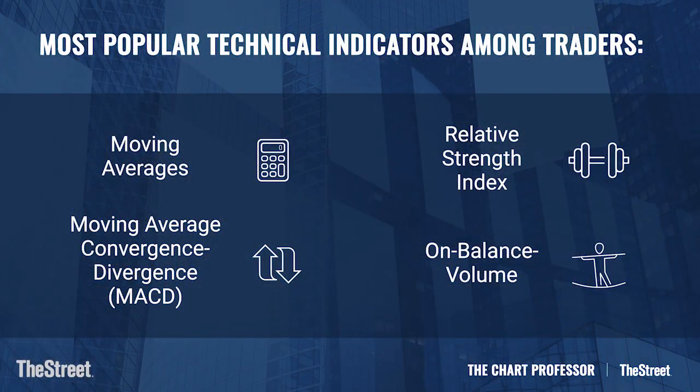There are some popular indicators that people use. One of them is moving average. Signals are black and white — they're not gray. When a 50-day moving average crosses above a 200-day, that's a very popular signal called the golden cross. A lot of people will follow that. It's belated — it's after the fact — but people like that, and it can work well in a trending market, and markets do trend.